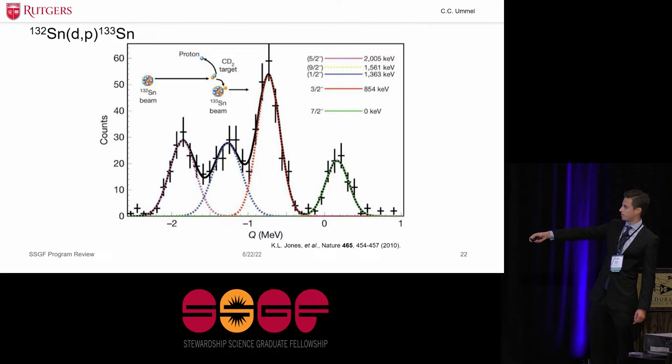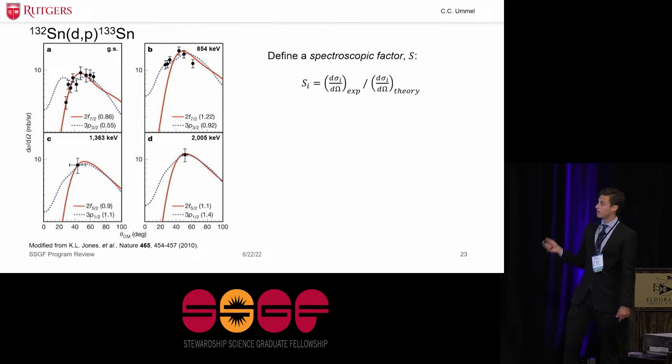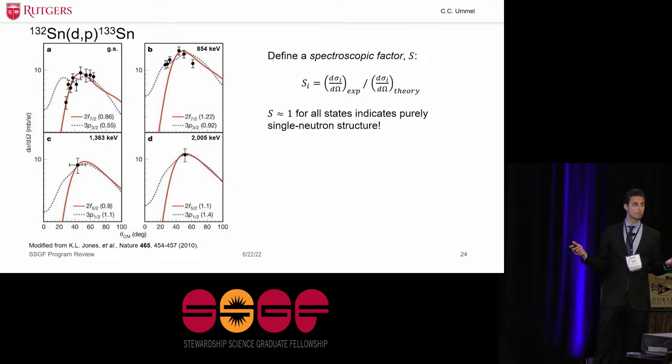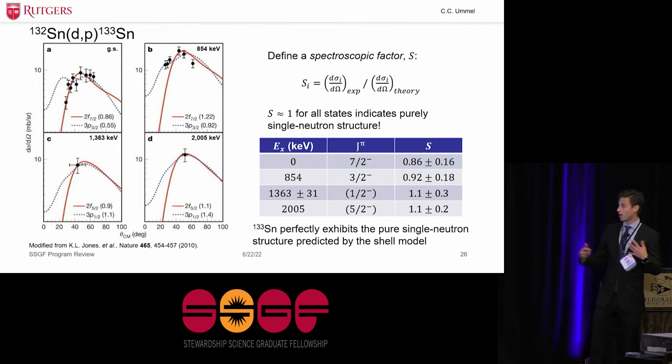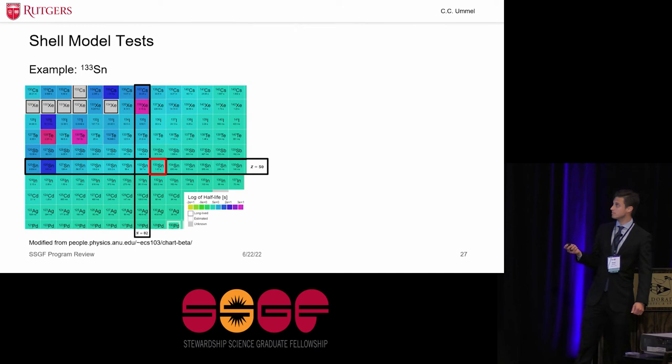And then they looked at the outgoing proton, which told them information about how that tin-133 was made. And so they observed four states, a ground state here, and then moving negative in Q values, actually moving upward in excitation energy, and three excited states. So the next step was to determine just how single particle like those states were. And the way they did that is they took the angular distribution of the protons from these d,p reactions populating each of these levels in tin-133, and they compared to theoretical predictions of what that angular distribution should look like, given that that neutron was occupying a single particle orbital. And so defining a spectroscopic factor, which is a ratio between the experimental and theoretical angular distributions, a spectroscopic factor of one for all these states indicates a purely single neutron-like structure. And so what they found is, indeed, within error, all of those four levels had a spectroscopic factor of one, and therefore tin-133 very well exhibited the pure single neutron structure that was predicted by the shell model.